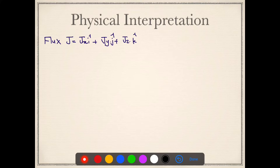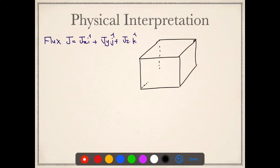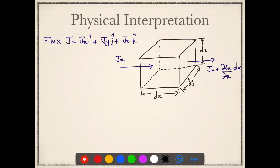Flux is defined as a quantity per unit area. When I say mass flux, that is mass flow rate per unit area; if I say momentum flux, it is momentum flow rate per unit area. Now let us say that we have an infinitesimally small volume, and we are considering the x component of flux.